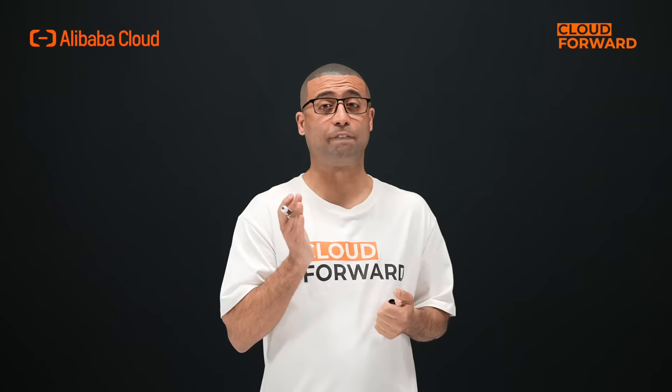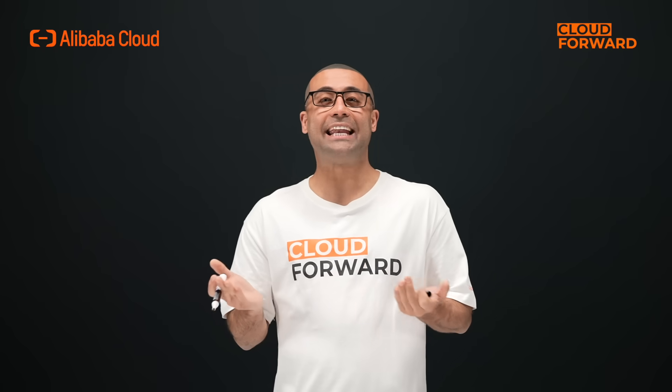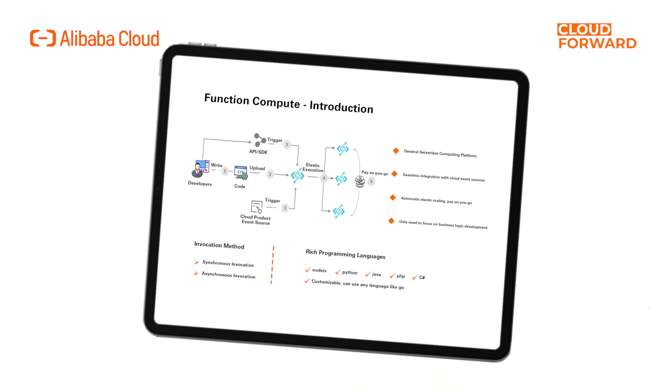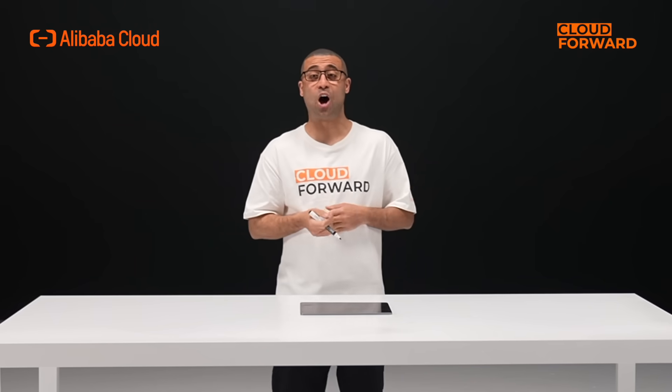Alibaba Cloud offers serverless products for functions, applications, and containers, allowing users to choose the appropriate product based on their specific use case. Alibaba Cloud Function Compute is a fast, function-as-a-service product that is event-driven and fully managed. All users need to do is write the code and upload it to Function Compute. There is no cost until the function is called. It can be invoked through the product's API, SDK, or through event sources such as Alibaba Cloud's OSS events — for example, automatically processing a file when uploaded to a bucket, or decompressing a zip package to another bucket.